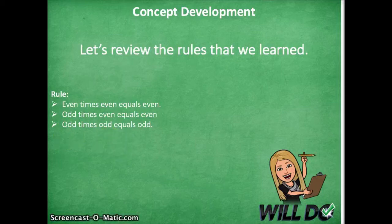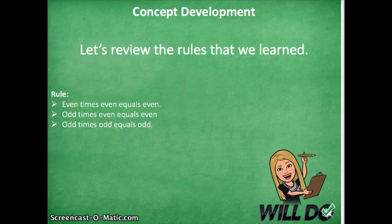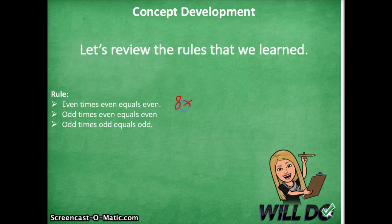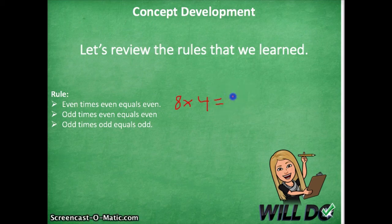And we can give an example of each here. This might be a good thing to put in your math notebook. Even numbers like eight times four equals an even product, thirty-two.